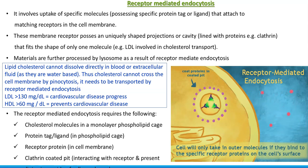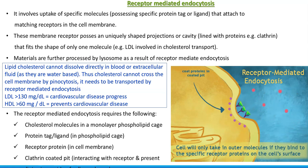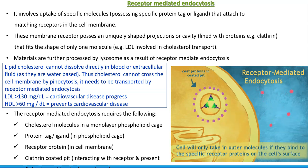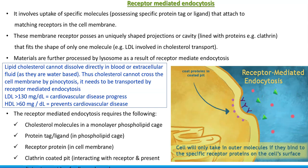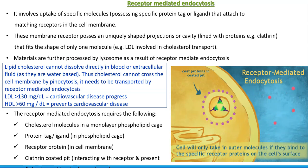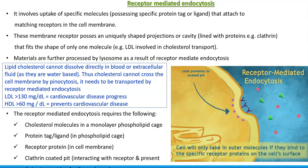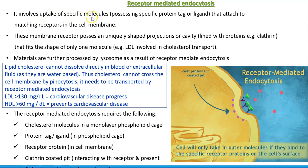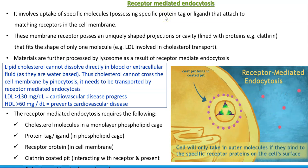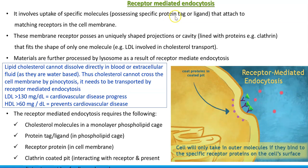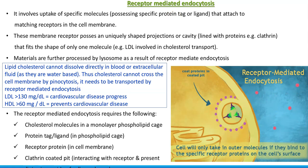Some kind of endocytosis in which some specific receptors are involved in the process. You can see in the right-hand side animation the receptors that are present in a Y-shaped structure. That Y-shaped things are actually the receptors in which a molecule is getting attached and it has been endocytized. It involves uptake of specific molecules that possess a special tag or ligand — some special molecule possessing a tag or ligand can be attached to the matching receptor in the cell membrane.